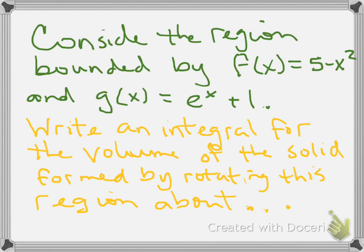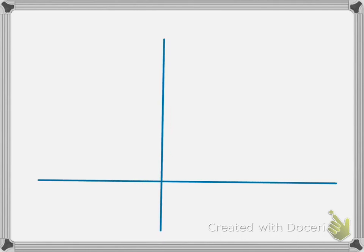The first type of examples we're going to do are through rotation. We're going to write an integral for the volume of the solid formed by rotating this region about several different lines. Before that, we have to think about the picture — the area that we're considering here.